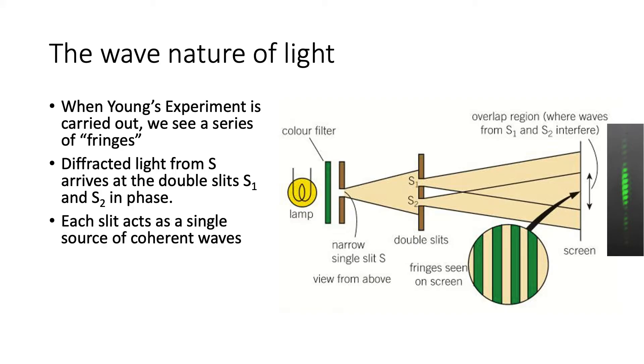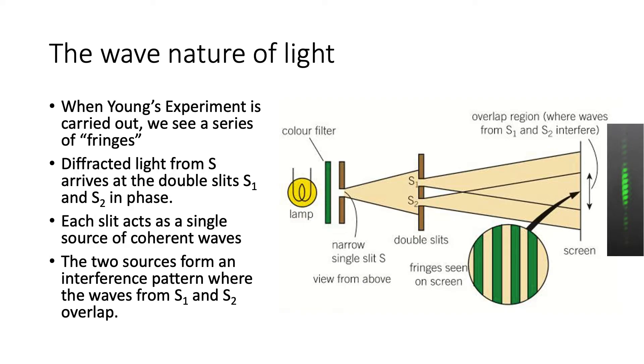Remember that interference depends on the path, the difference in path length of the two waves arriving at any given point. If the path length is exactly the same, or has a difference of an integer number of wavelengths, then you get constructive interference and a bright fringe, and you get dark areas where you get destructive interference.